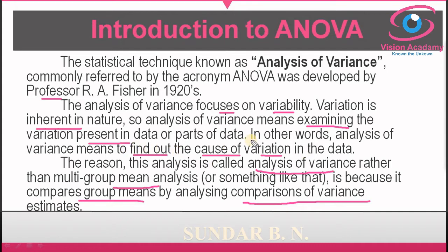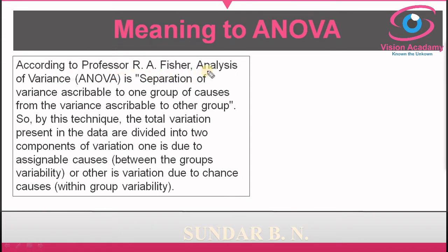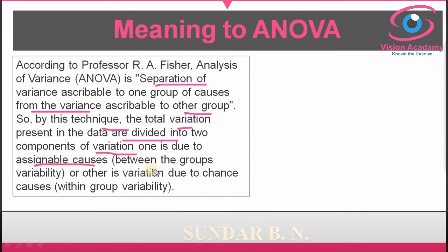According to R.A. Fisher, who developed ANOVA, analysis of variance is the separation of variance ascribable to one group of causes from the variance ascribable to another group. By this technique, the total variation present in the data is divided into two components: one due to assignable causes, which is between-group variability, and the other due to chance causes, which is within-group variability.